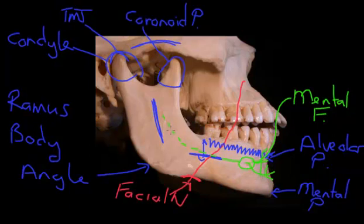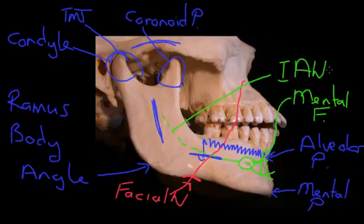This nerve, as it's buried inside the mandible, is called the inferior alveolar nerve. When we look at the medial surface of the mandible, we'll see the little opening where it enters on the medial surface. So those are the key features of the mandible from the lateral surface.